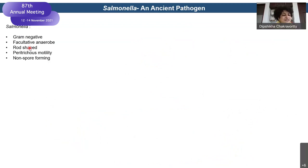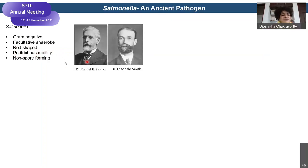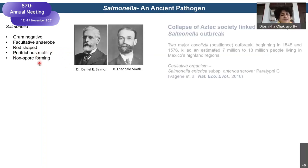Salmonella belongs to gram-negative bacteria. It is a facultative anaerobic, meaning it can live in very low concentrations of oxygen, like a microaerophilic. It's a rod-shaped bacteria, and it is motile with many flagella all over, which is known as peritrichous motility. They do not form spores — they are non-spore formers.